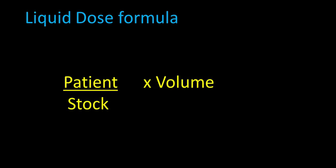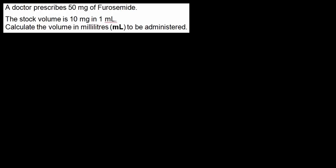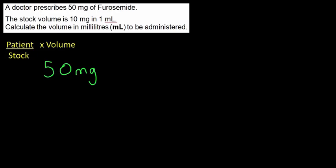Question one: a doctor prescribes 50 milligrams of furosemide. The stock volume is 10 milligrams in one millilitre. Calculate the volume in millilitres to be administered. Using the formula — what you want to give the patient over what you've got in stock, times what it's in — I want to give the patient 50 milligrams and in stock I have 10 milligrams.